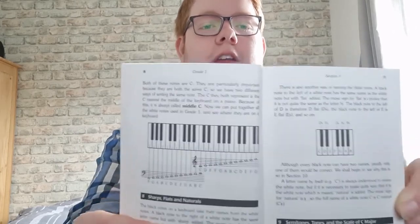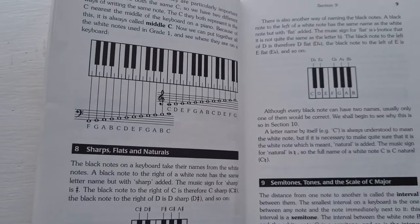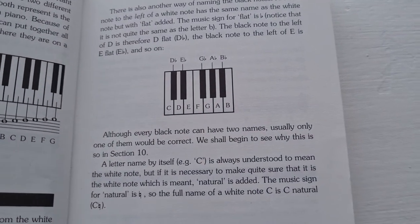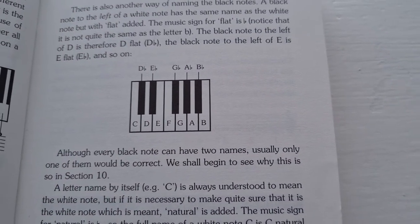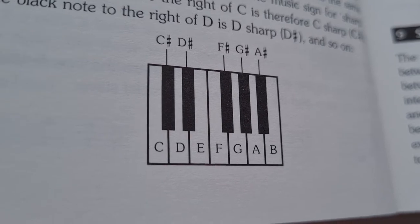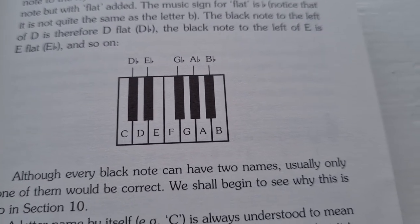Our first discussion is sharps and flats — what they are and how they look. I have this book called First Step to Music Theory, a very useful book, and it has a page on sharps and flats. A sharp is a hashtag equivalent, and a flat is almost like a rounded lowercase 'b' — instead of the straight back you just round it. Those are the symbols that can be written next to notes in music.